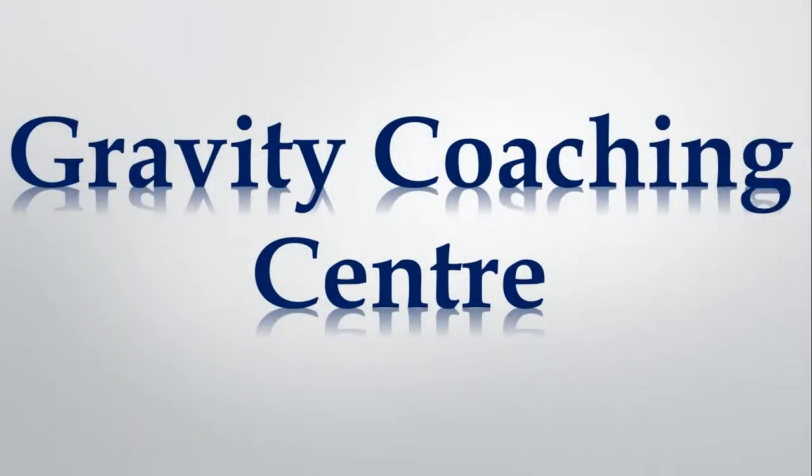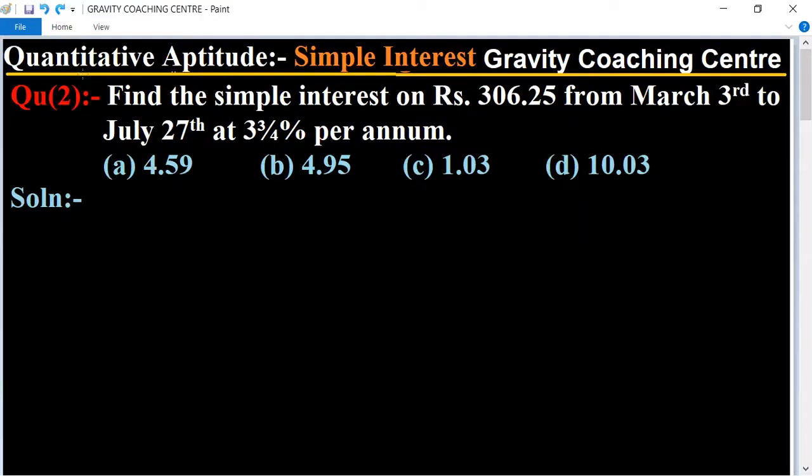Welcome to our channel Gravity Coaching Center, Quantitative Aptitude chapter Simple Interest. Question number two: Find the simple interest on rupees 306.25 from March 3rd to July 27th at 3 ¾ percent per annum.